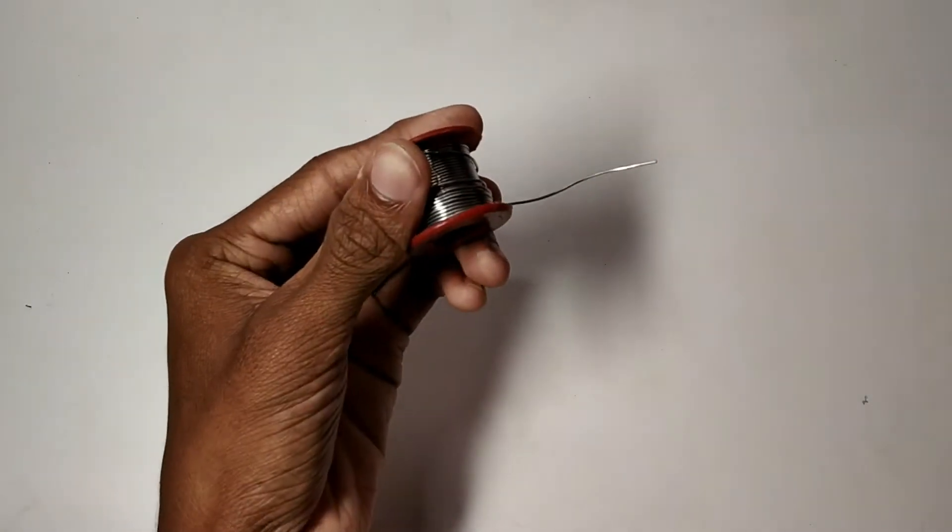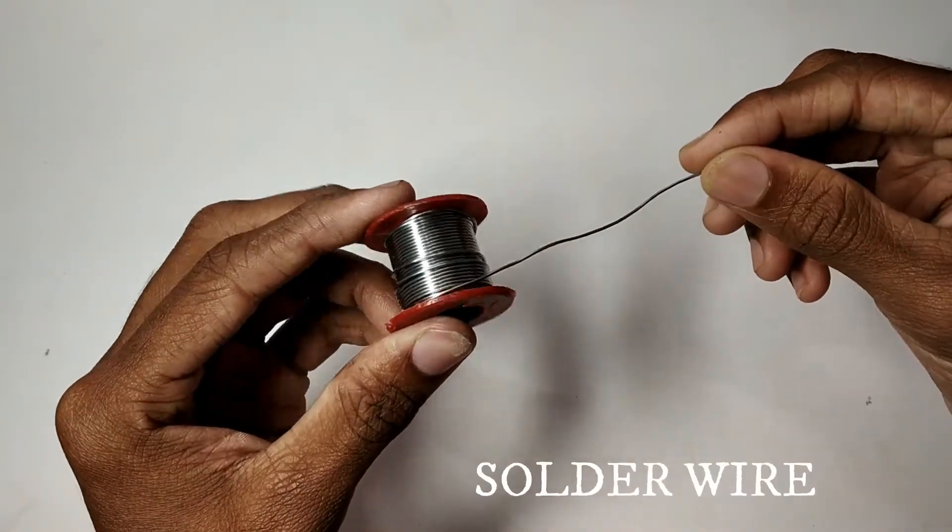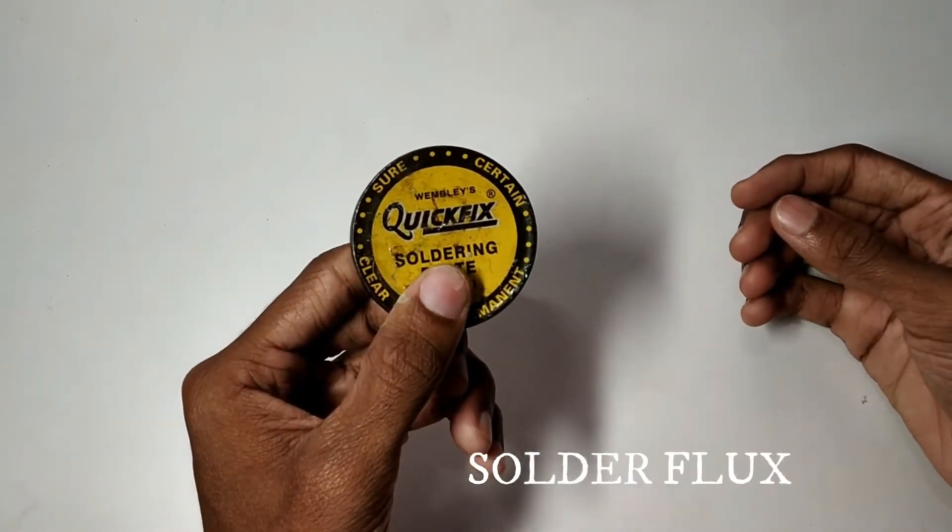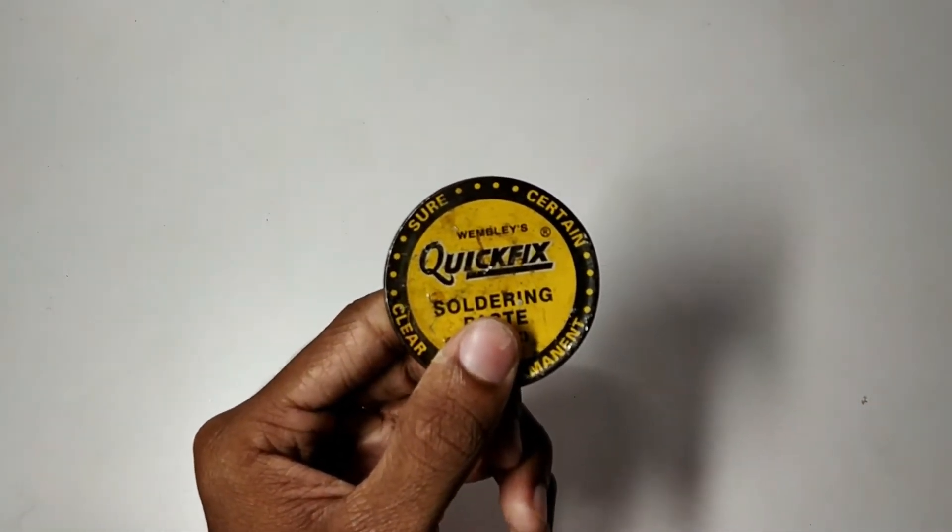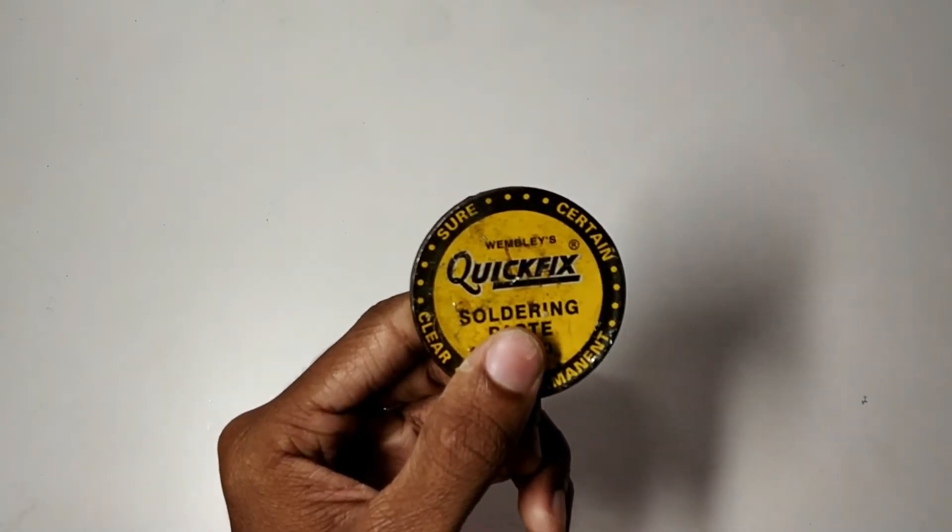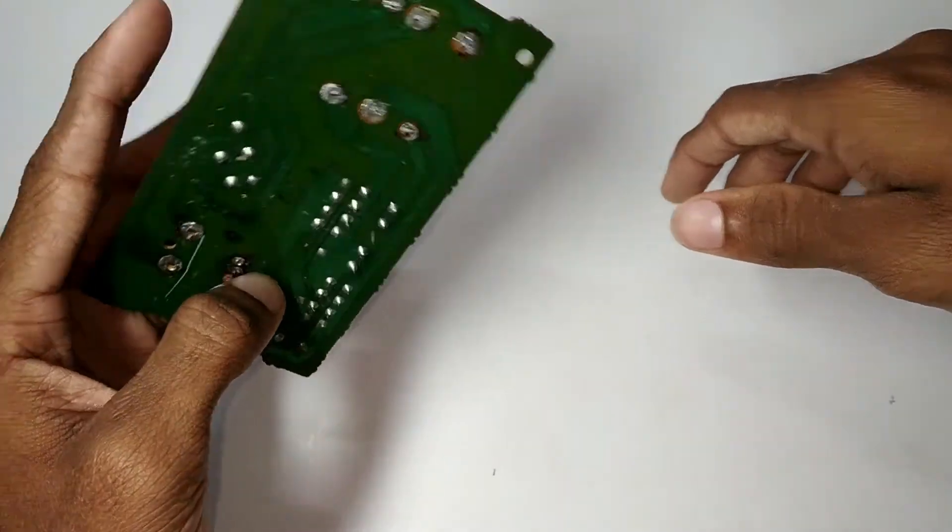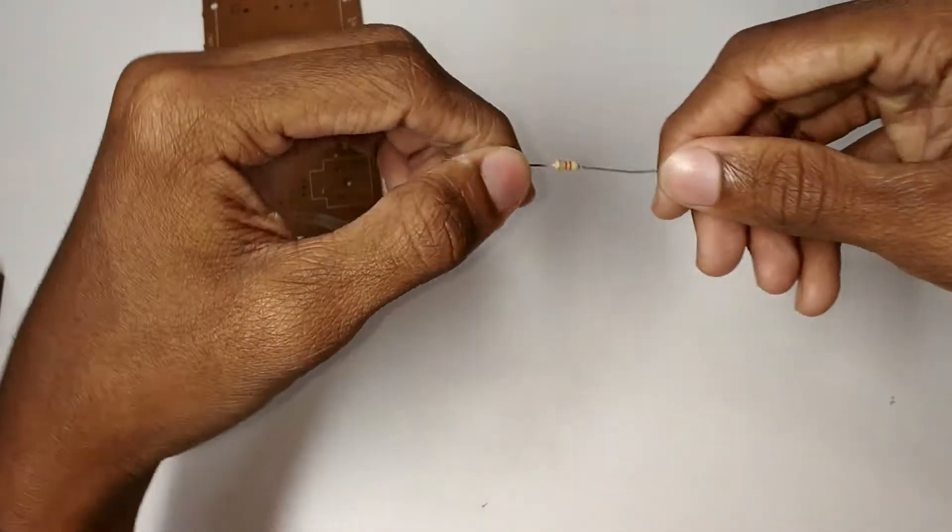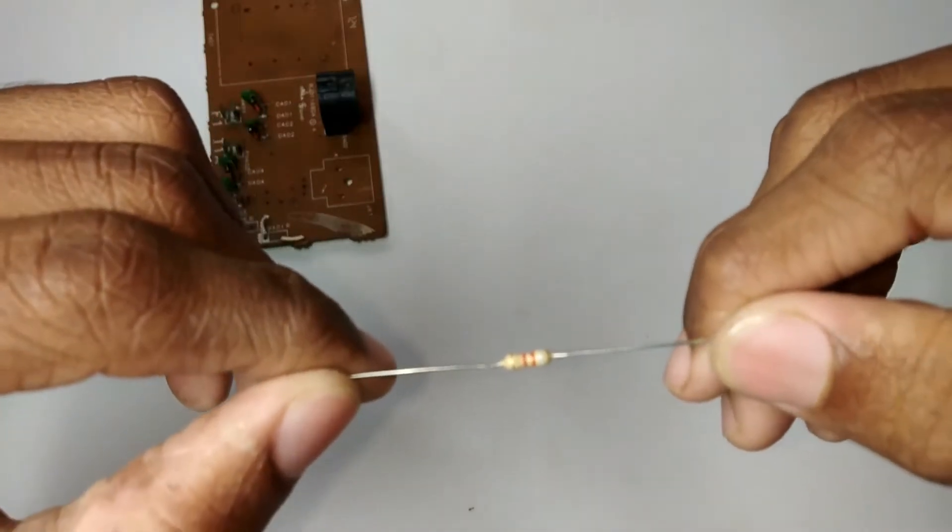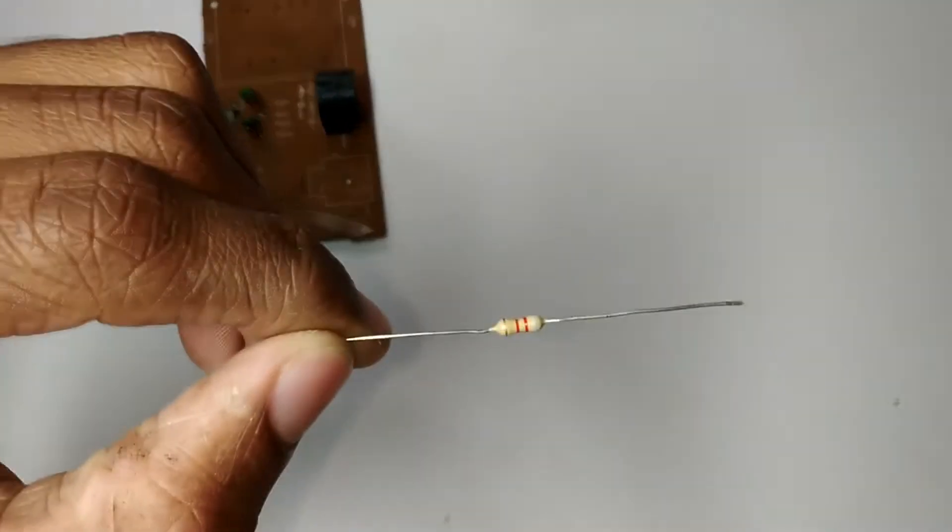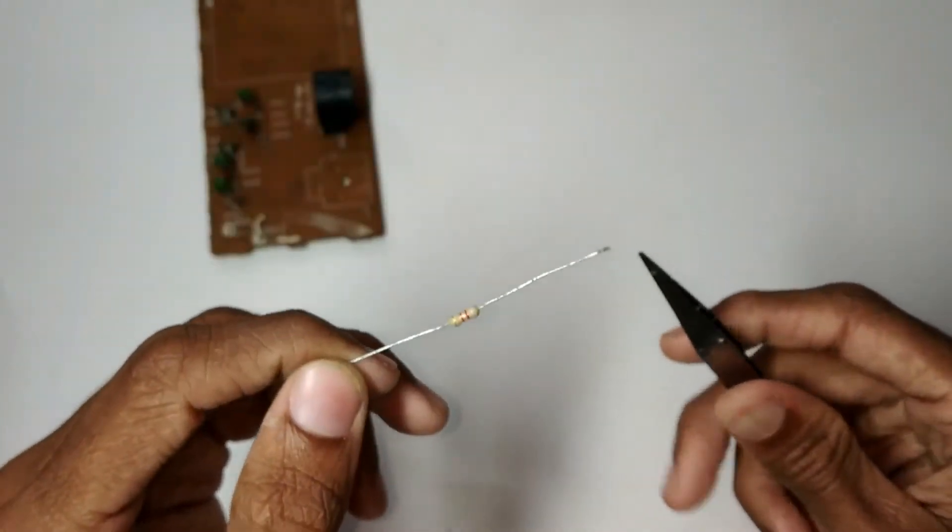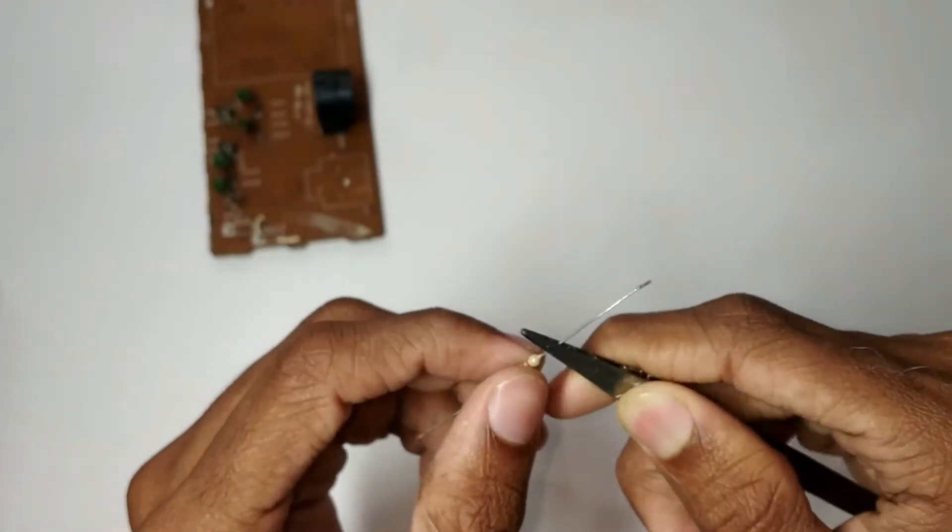We have a soldering station, a 60-40 solder wire, soldering flux, and an oxide coating. We have to remove it. We have to remove the printed PCB board, the leg, and the resistor. We have to clean the leg and the oxide coating.